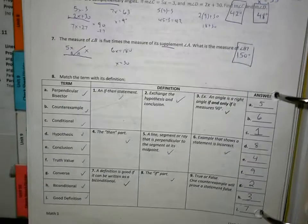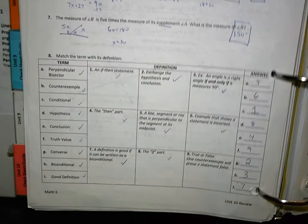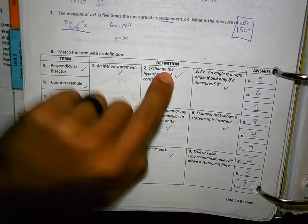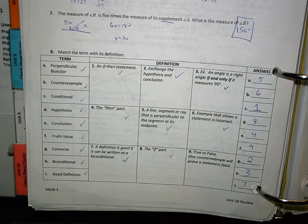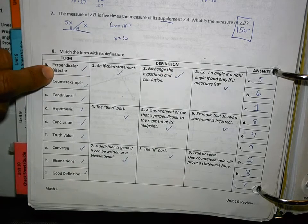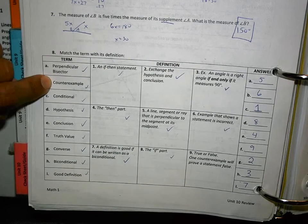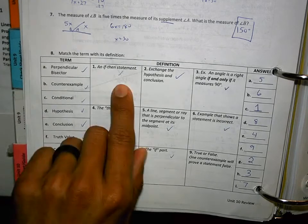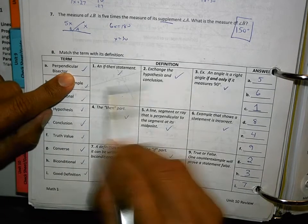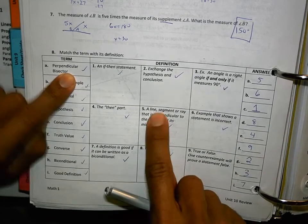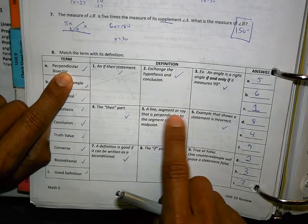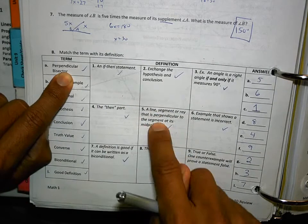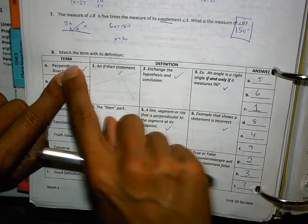Looking at this whole chart, I really like it because you have to know a term and you have to know its definition. So, if I'm looking at perpendicular bisector and I need a counterexample or conditional, I need to be able to figure out what's the definition of perpendicular bisector. So, I have to go over here and figure out that number 5, a line, segment, or ray that is perpendicular to the segment at its midpoint matches with perpendicular bisector. A is number 5.